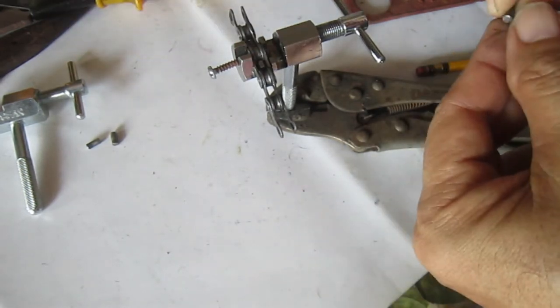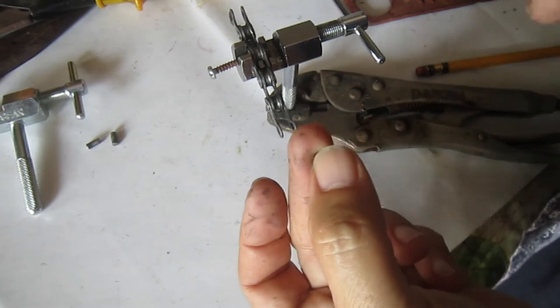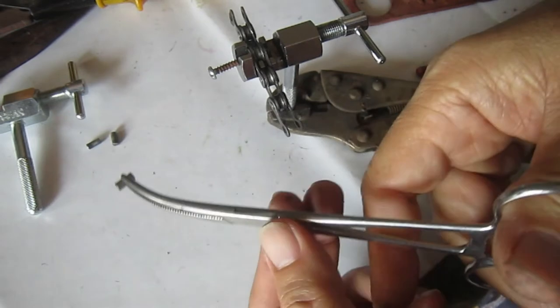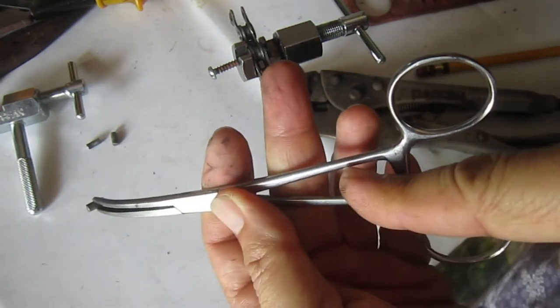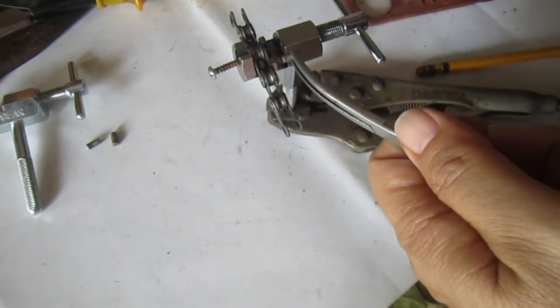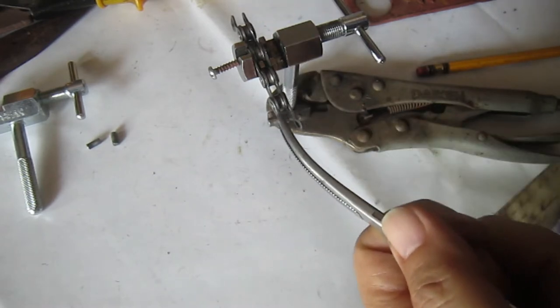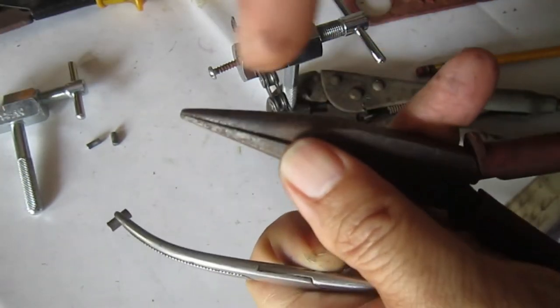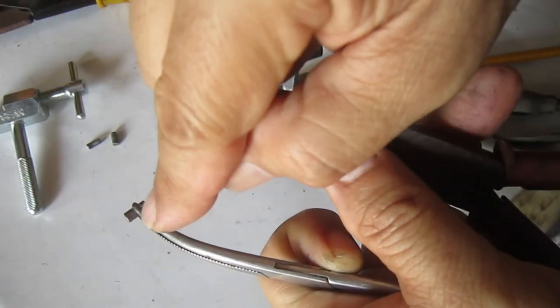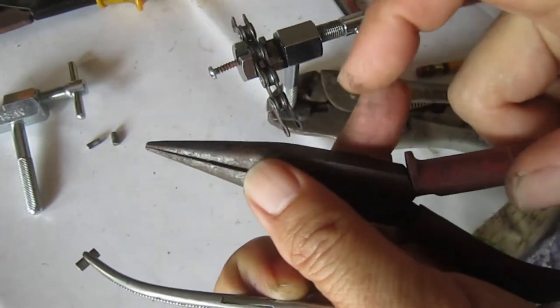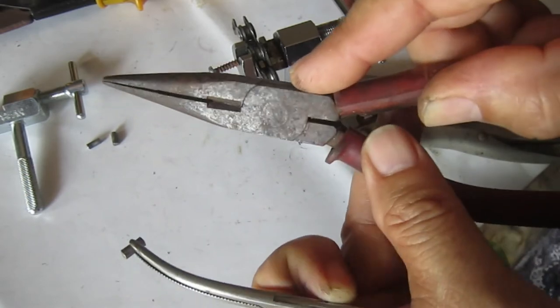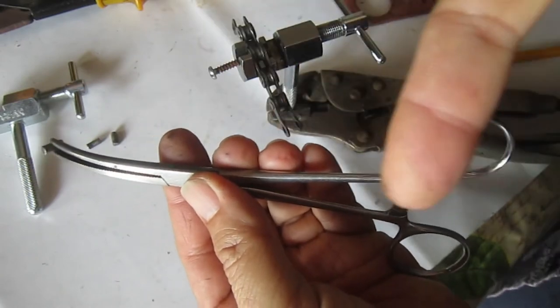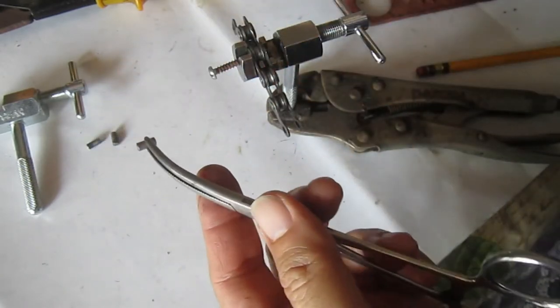So you need to have this surgical tweezers because this locks in place. There's a lock here so that you can hold it because your fingers won't fit there. Now you can use a long nose pliers, but you have to tie a rubber band so that the pin will be held in place by the long nose. Otherwise it will drop, so place it there and then tie a rubber band. You will imitate this surgical tweezers.